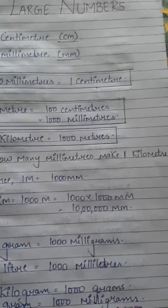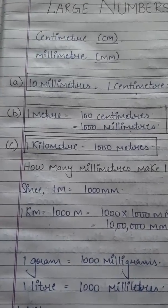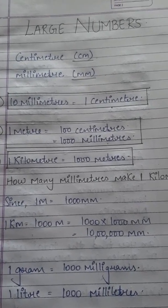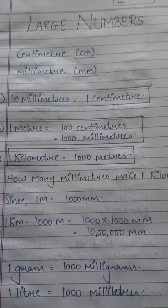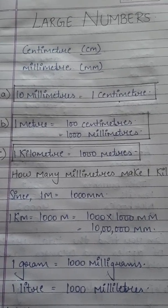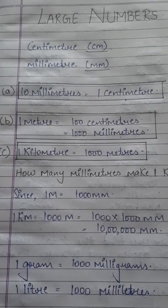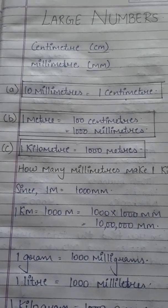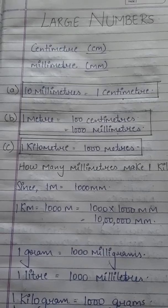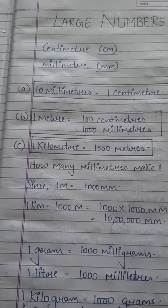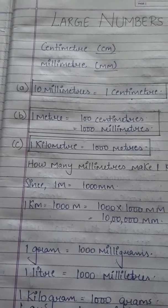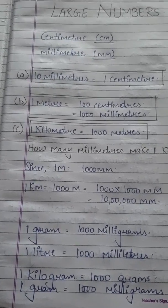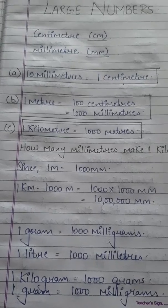Children, you all go to the market and buy rice and wheat — we buy those in kilograms. But for smaller things, like when you go to the vegetable market and want ginger, you will not take it in a large quantity. We measure such things in grams. So, 1 kilogram equals 1000 grams.